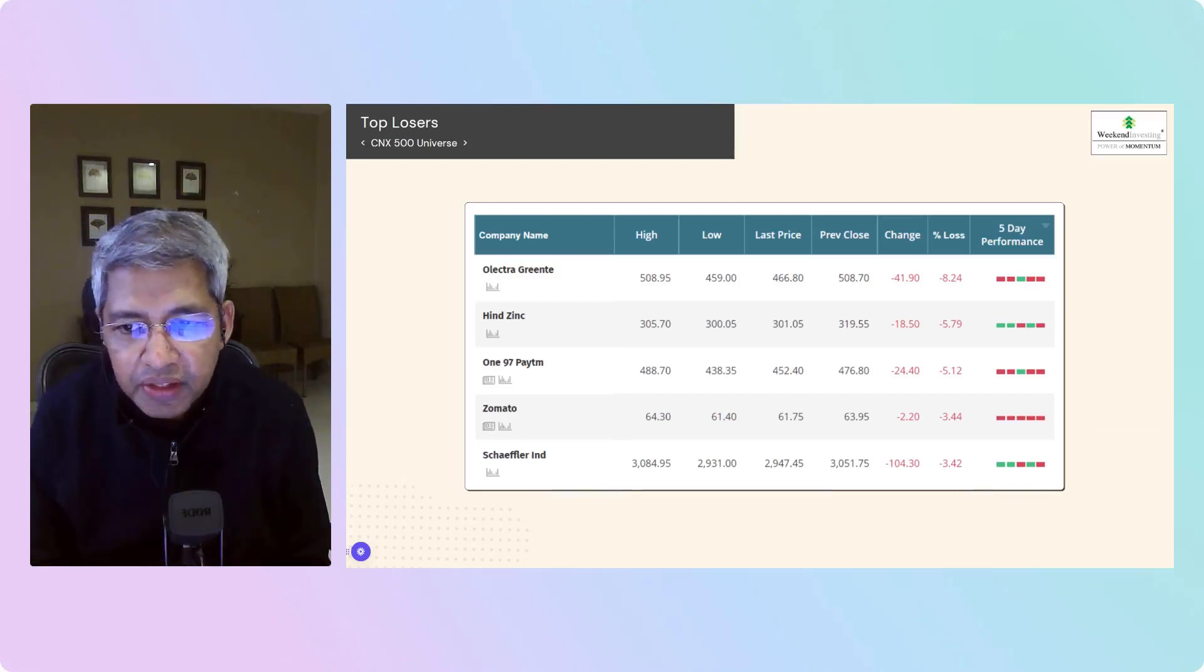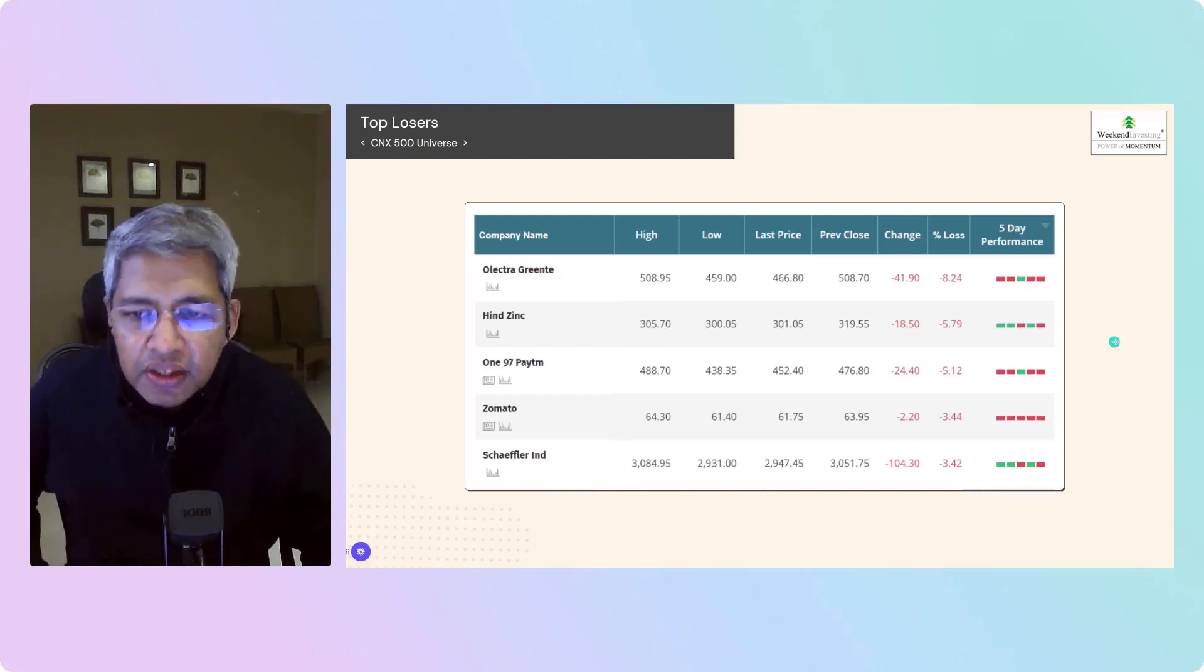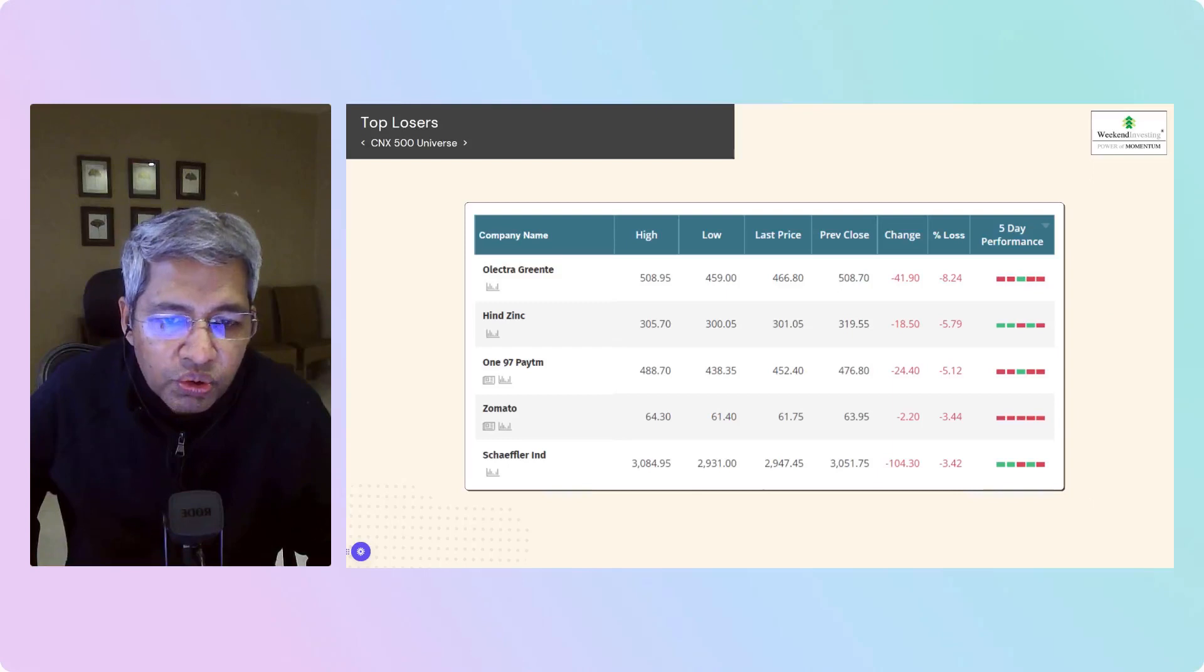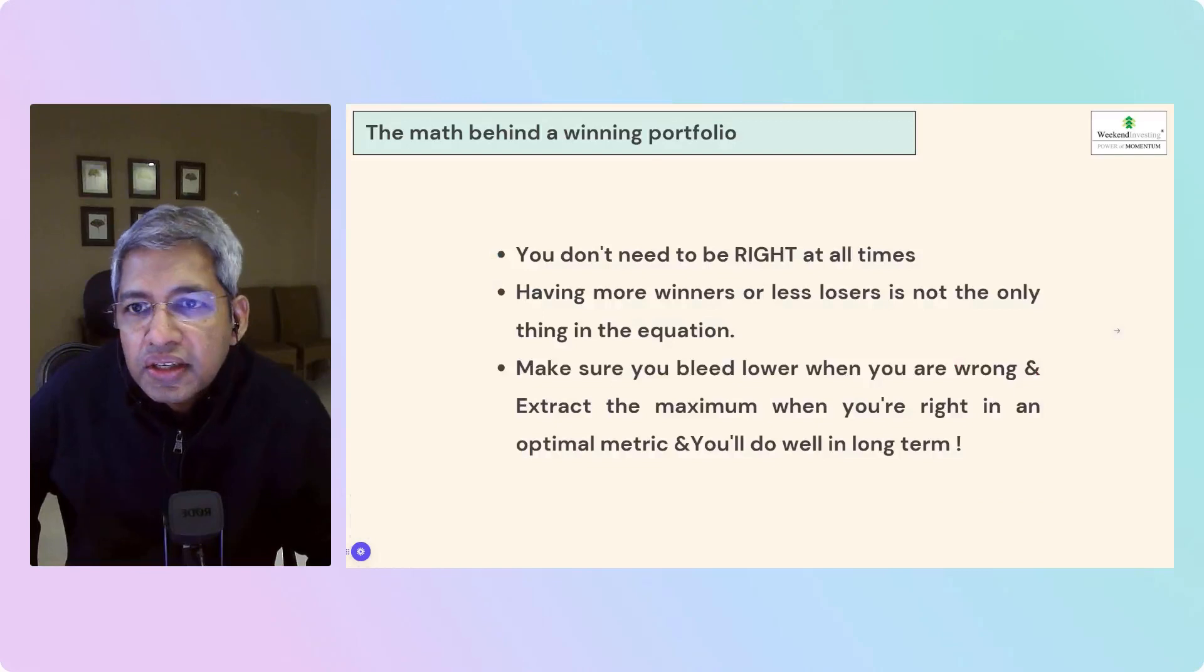Hindalco down 6%, Paytm down another 5%, now at 452. This is just a train wreck currently. Zomato down 3.5%, Schaeffler India down 3.4%. All these stocks that have been continuously falling, at every level people have been saying they have value, but you need to quantify the basis on which you will be buying these stocks. If you find value in something at 2000 and then it goes down to 450, there's something wrong in the valuation matrix that you are using.